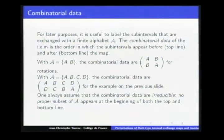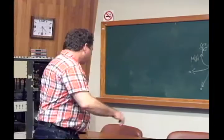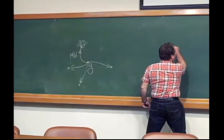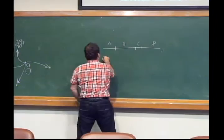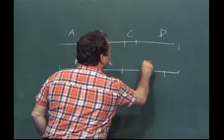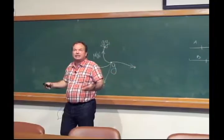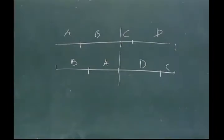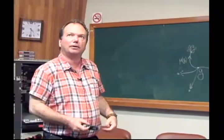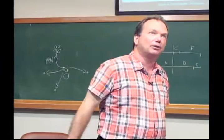There is a restriction on the combinatorial data — a kind of trivial one. You ask that the same subset of the alphabet does not appear at the beginning of both the bottom and top lines, in order not to have a trivial decomposition. If you had, say, ABCD on top and BA, DC on the bottom, you could cut the interval into two invariant pieces and have two separate disjoint interval exchange maps. So I'm assuming the combinatorial data are irreducible — never of this kind.